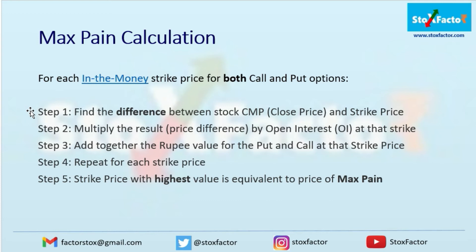You have to watch the Max Pain chart every day because option data changes daily. According to that, the Max Pain area also changes slightly. If there is a significant change in option OI at a particular strike price, then the Max Pain area will also start shifting as per the option chain data. If major support or resistance levels also start shifting, the Max Pain area will slightly change accordingly. So this is the theory of Max Pain.